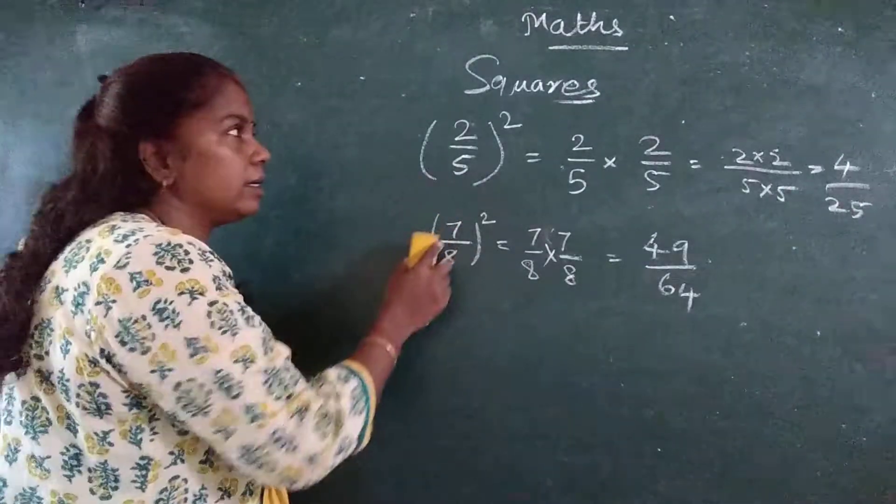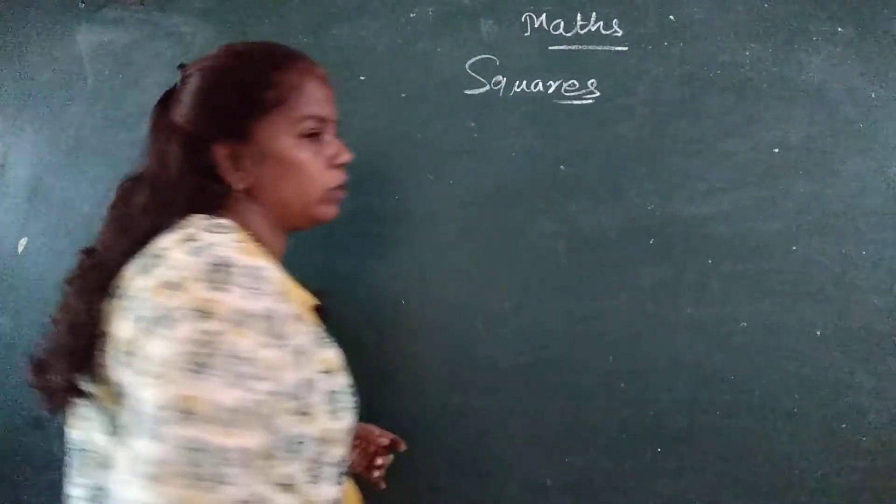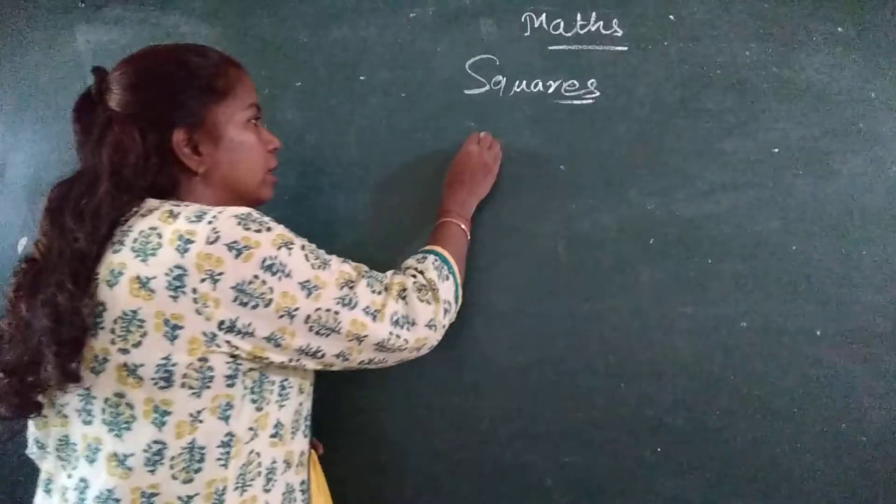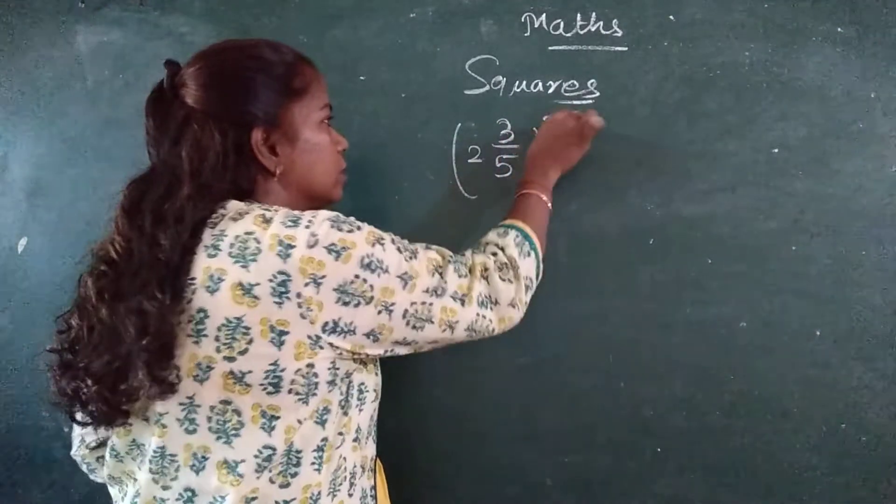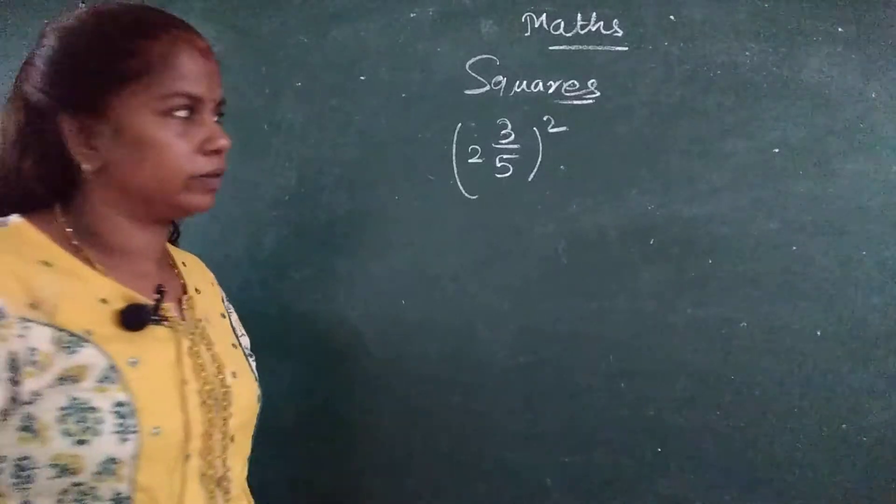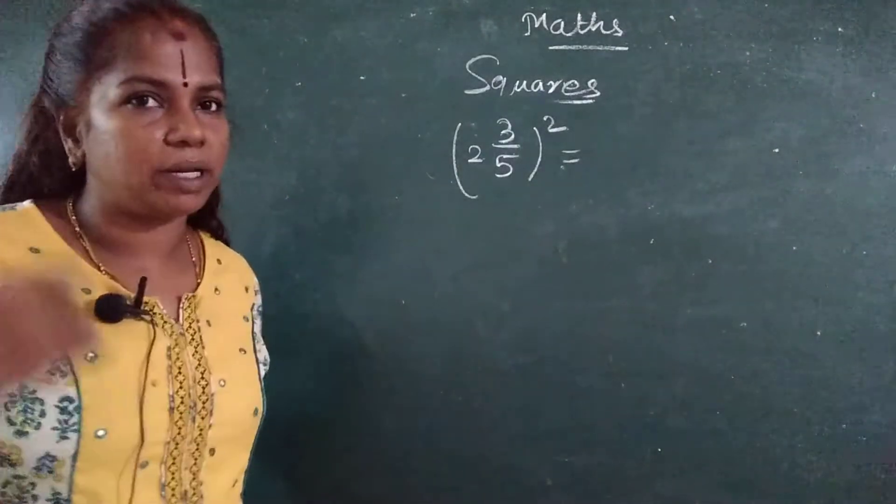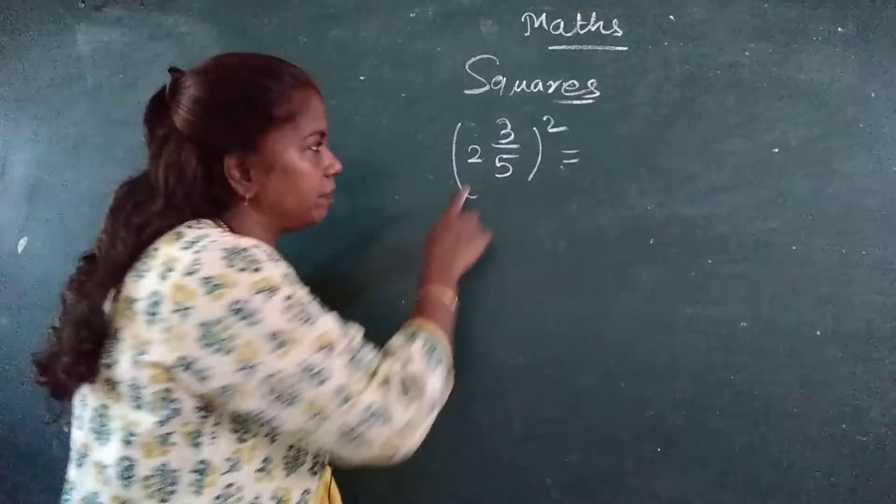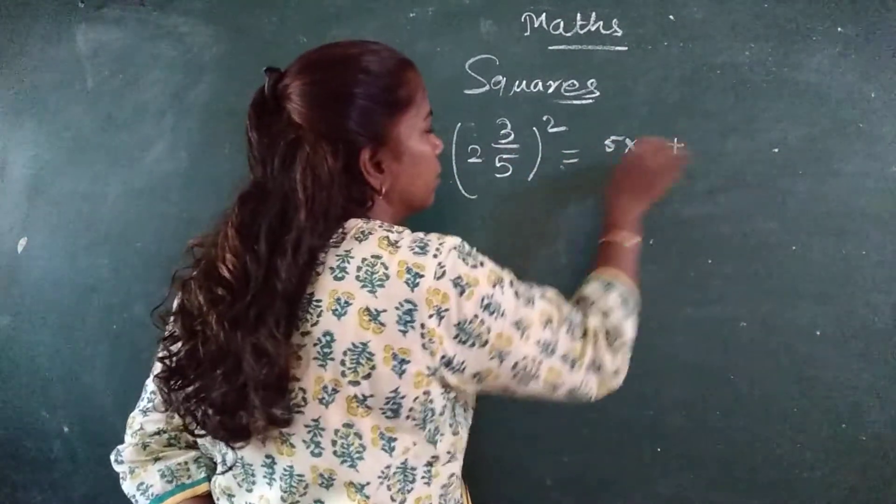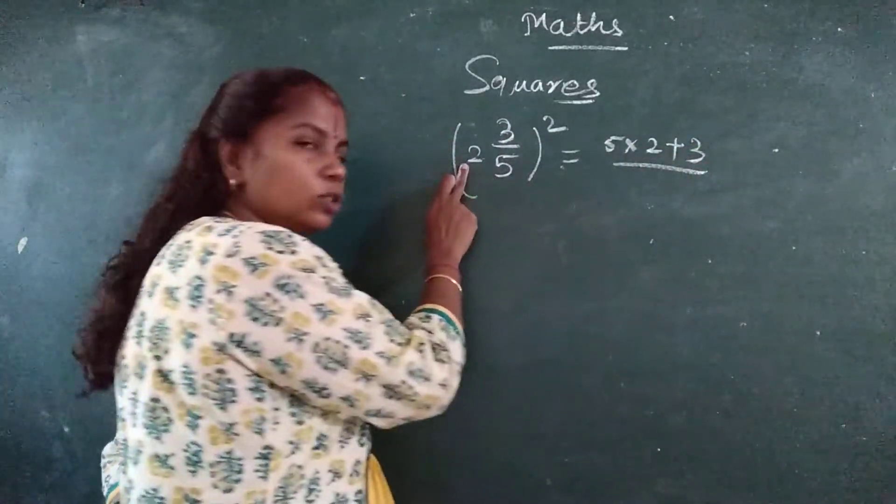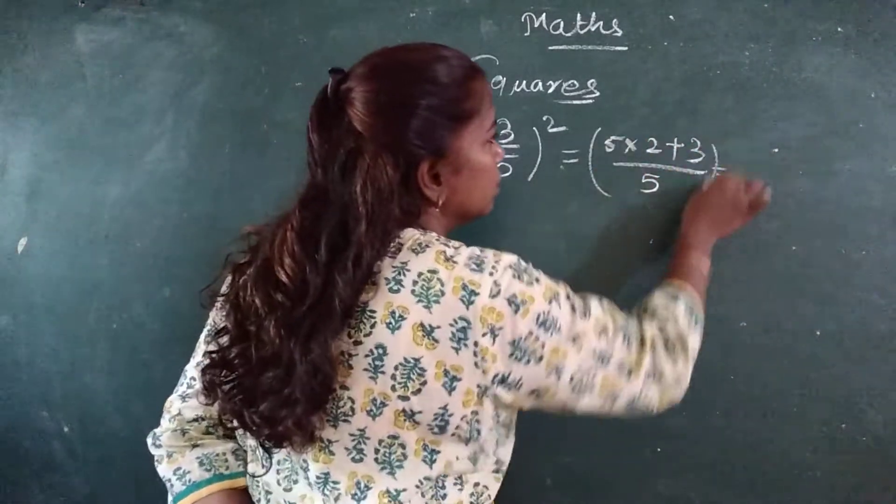Now this is the normal fraction I have given. I will give you mixed number fraction. How will you do? Mixed numbers. 2 integer 3 upon 5, the whole square. If this comes, how will you do? 2 integer 3 upon 5. You remember how to convert this mixed number into improper fraction? 5 into 2 plus 3. 5 into 2 plus 3 upon 5, the whole square.